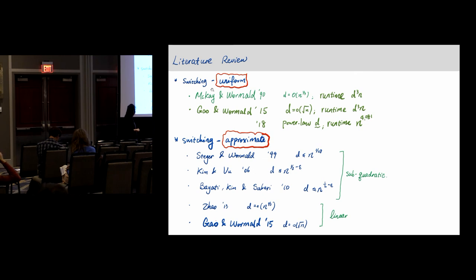But then using the switching method or some ideas from there, people started to study approximate versions using the switching method. They're even faster, most of them sub-quadratic and some are linear time. Again, the d can't be too large, typically bounded by square root of n. Then a few years before, myself together with Wormald, we added more ingredients and then we can make the switching method work for d up to square root of n.